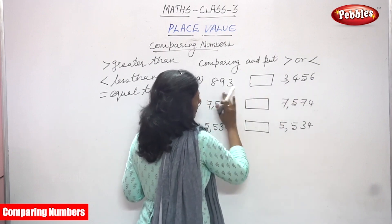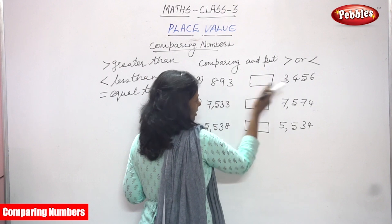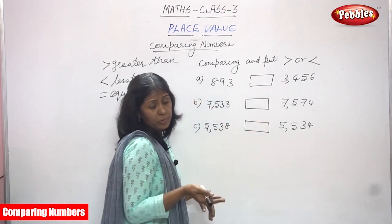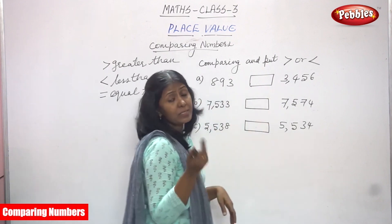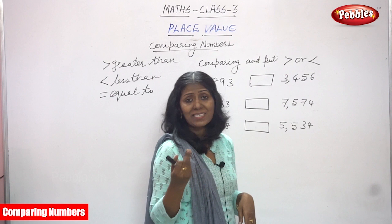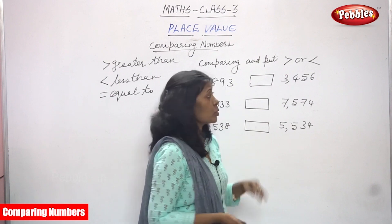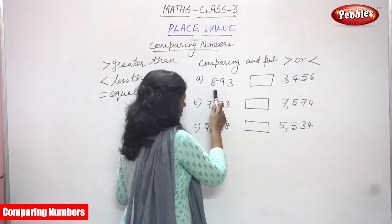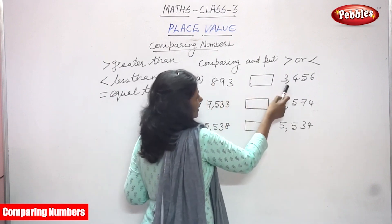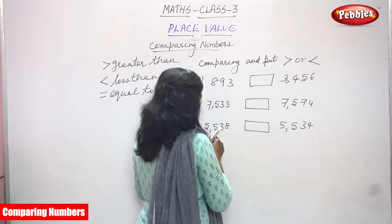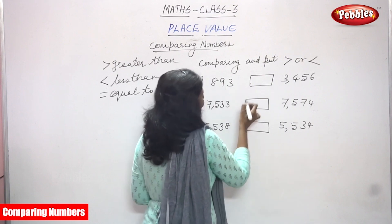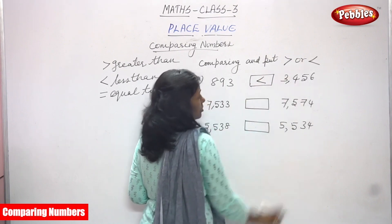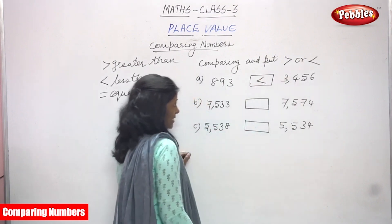So you have to compare the three digit as well as the four digit number. You know which is a greater number? Surely you know that the four digit number is the greater one. So 893 is less than 3456.